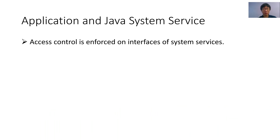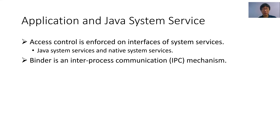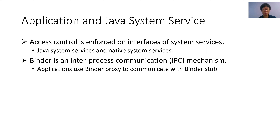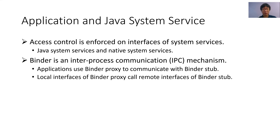Since system services usually provide sensitive functions, Android enforces access control on their interfaces. Depending on the programming language used to implement their functionality, system services are categorized into Java system services and native system services. Since Android applications and system services run in separate processes, Android provides a binder inter-process communication mechanism for applications to interact with system services. Applications use a binder proxy to communicate with the corresponding binder stub, which is usually system services themselves or special objects held by system services. Applications invoke local interfaces defined in classes of the binder proxy to call remote interfaces defined in classes of the binder stub.